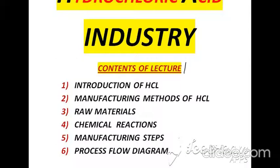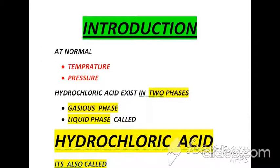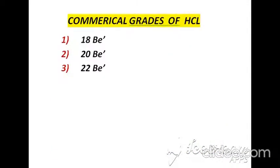Starting our lecture from the introduction of hydrochloric acid: at normal temperature and pressure, hydrochloric acid exists in two phases. The first phase is gaseous phase and the second is liquid phase. That liquid phase is called hydrochloric acid and also called mineral acid. In the market, hydrochloric acid exists in different commercial grades: 18, 20, and 22 BE, where BE represents the Baumé scale.